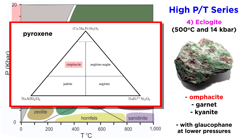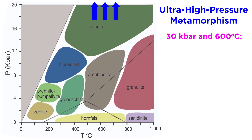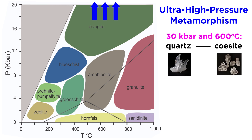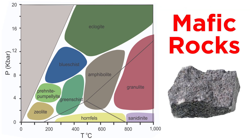Omphacite is a pyroxene solid solution between augite and jadeite, and kyanite is the high-pressure polymorph of Al2SiO5. By the time we reach about 30 kilobars and 600 degrees Celsius, amphibole completely breaks down and quartz transforms into coesite, its high-pressure polymorph. And at around 35 kilobars, graphite turns to diamond. Metamorphism that produces coesite and diamond is said to be ultra-high-pressure metamorphism.